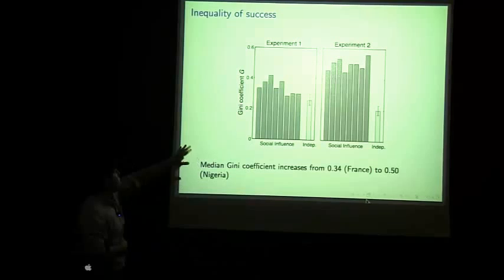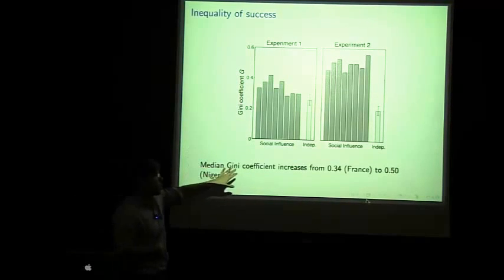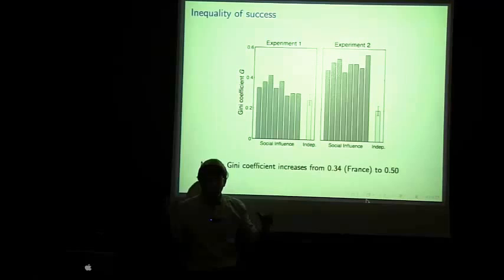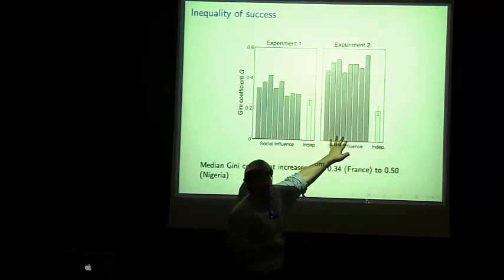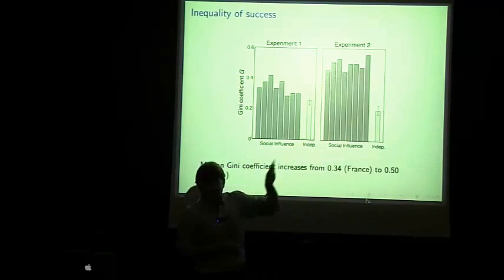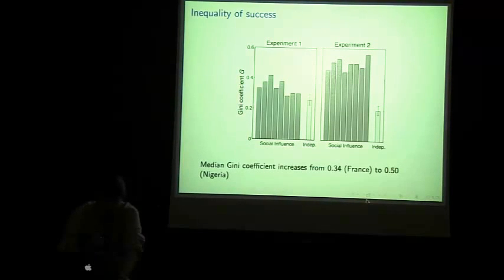Many of you are probably not familiar with the Gini coefficient and what's the difference between a Gini coefficient of 0.34 and 0.5. So, to put that in some context of current levels of income inequality, this is equivalent to the income inequality in France, and this is equivalent to the income inequality in Nigeria. So, even though that is a big difference that we're able to see by increasing the amount of social influence.